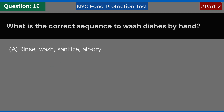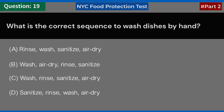What is the correct sequence to wash dishes by hand? A. Rinse, wash, sanitize, air dry. B. Wash, air dry, rinse, sanitize. C. Wash, rinse, sanitize, air dry. D. Sanitize, rinse, wash, air dry. Answer: C. Wash, rinse, sanitize, air dry.